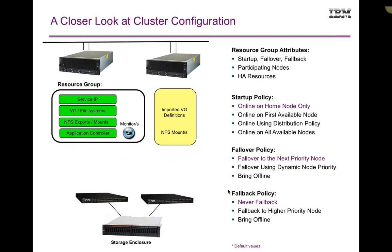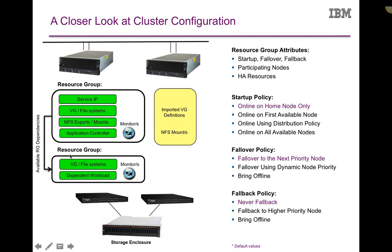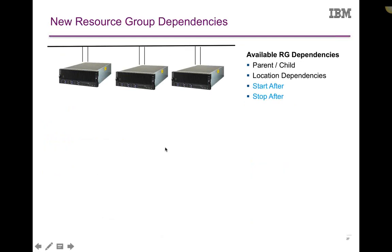As far as your resources and how they're going to get acquired — we still have the concept of startup, failover, and fallback policies. The ones highlighted in purple are the default policies, but you can certainly change those. Think of our resource group as a container; based on where it's being hosted, those resources are going to follow the policies and get the highly available resources online. If you want to get fancy or have different resources independent of each other, you can have resource group dependencies — say bring this workload online first followed by this additional workload. We support parent-child dependencies where if the first workload goes away, you take the child workload away as well.